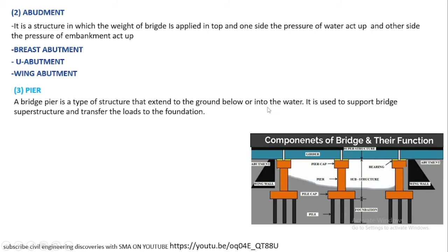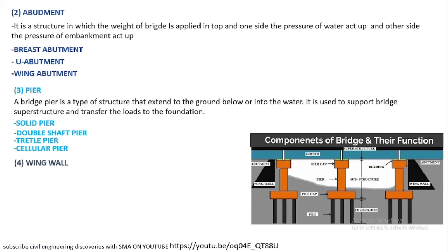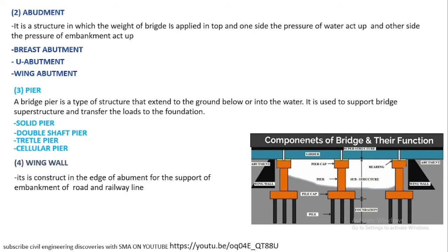A pier is a type of structure that extends into the ground or into the water. It is used to support the bridge superstructure and transfer the load to the foundation. A pier is divided into different types: solid pier and double-sharp pier.